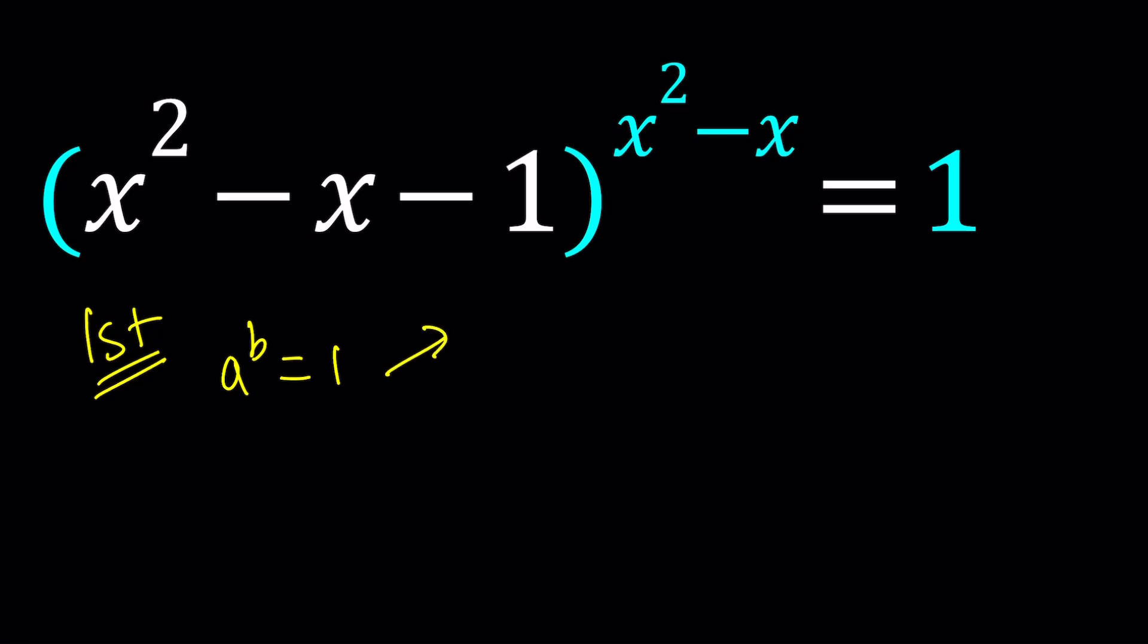So suppose we have a to the b equals 1. Then I can split it up into three cases. b is equal to 0, because when b is 0, any number to the power of 0 equals 1. By the way, some people exclude 0, but as many people believe, 0 to the power of 0 is equal to 1, and I made a video about it. You can check it out. But the base doesn't matter here.